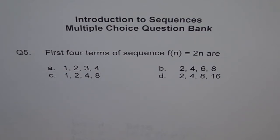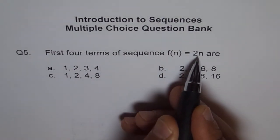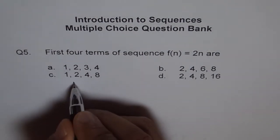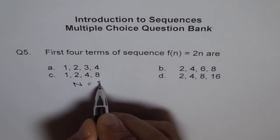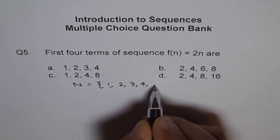So the best thing is to write your sequence here. Let's put it down: f(n) = 2n. First four terms - we are talking about the set of natural numbers, which means 1, 2, 3, 4, and so on.